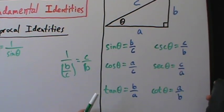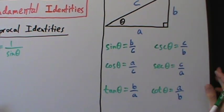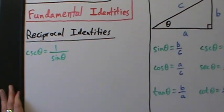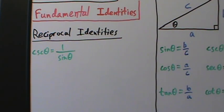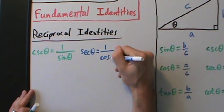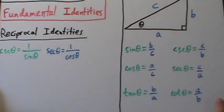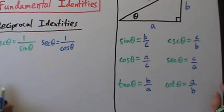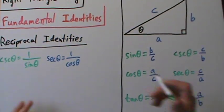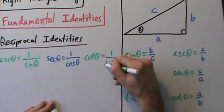There is a similar relationship between cosine and secant, and tangent and cotangent. The cosine of theta is A over C, and the secant of theta is the reciprocal, C over A. So we can say the secant of theta equals 1 over the cosine of theta. Tangent of theta is B over A, cotangent of theta is A over B — the reciprocal — so the cotangent of theta equals 1 over the tangent of theta.